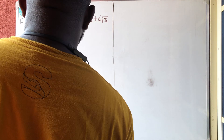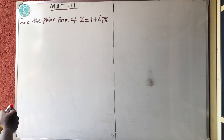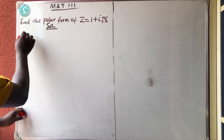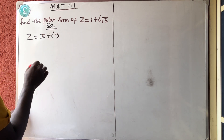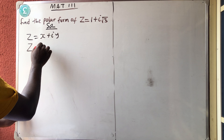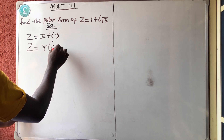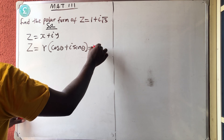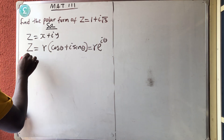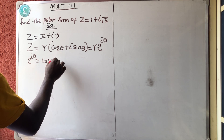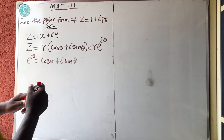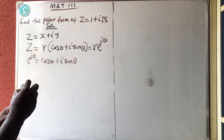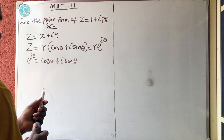Good afternoon and welcome to Master Talker online class. Today we'll be talking about the polar form of a complex number. The Cartesian form says z equals x plus iy. The polar form says z equals r times (cos θ + i sin θ), which equals r·e^(iθ), since e^(iθ) = cos θ + i sin θ. To get your polar form you need two things: r, called the modulus, and θ, called the argument.